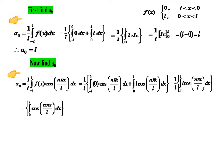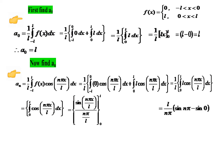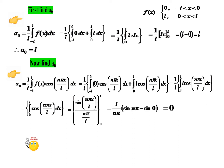Only the second integral contributes, since the first is zero. After L and L cancel, we integrate cos(nπx/L): the integral of cos(ax) is sin(ax)/a, so here with a = nπ/L we get sin(nπx/L) ÷ (nπ/L) evaluated from 0 to L. Applying limits: sin(nπ) − sin(0) = 0, so Aₙ = 0.